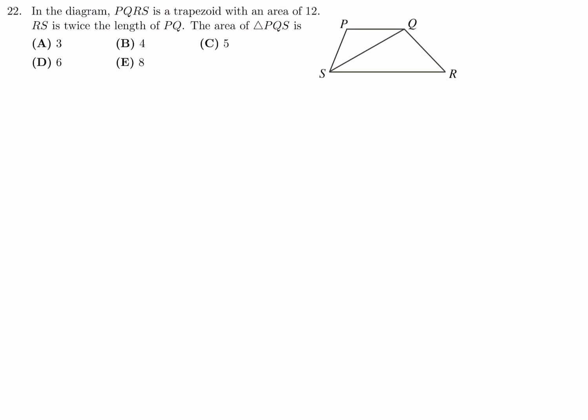So, first and foremost, we have to label this. RS, I'll call 2X. And that means PQ is just X, right? Because they are saying RS is twice the length of PQ. And then the area of a trapezoid, for example, if this is a trapezoid. And this is A and this is B. And top to bottom, that's H.